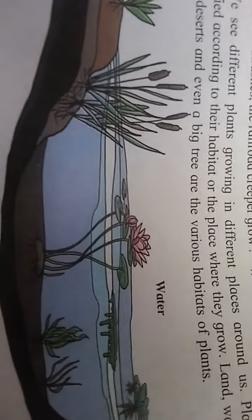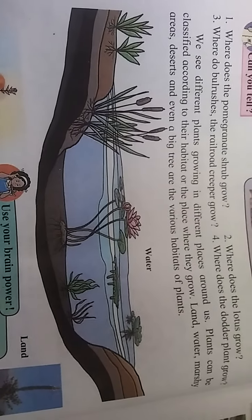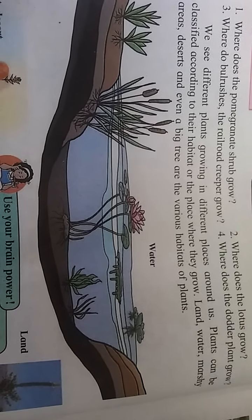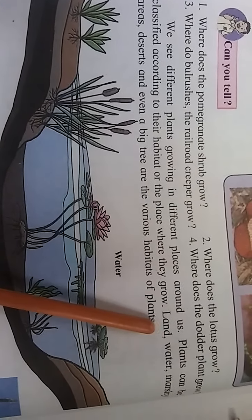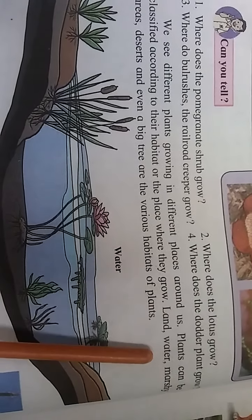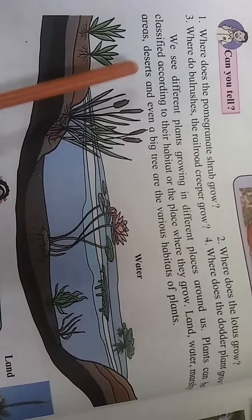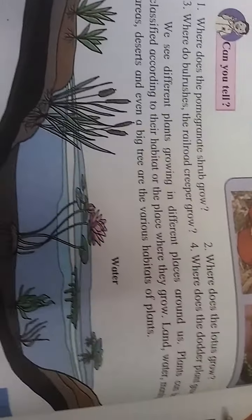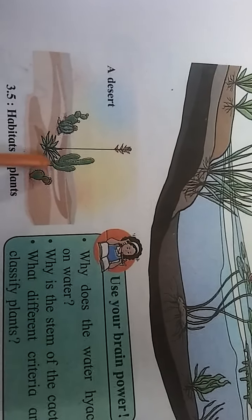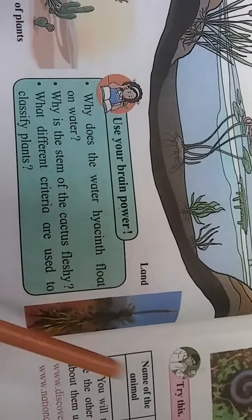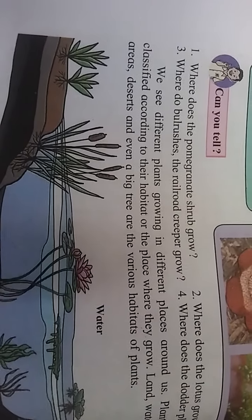Some plants grow in water, some on land. Land, water, marshy areas, desert, and even a big tree are the various habitats of plants. Some plants grow in aquatic environments, some in marshy areas, and some in deserts — for example, cactus grows in a desert area. This is how plants are classified based on where they grow.